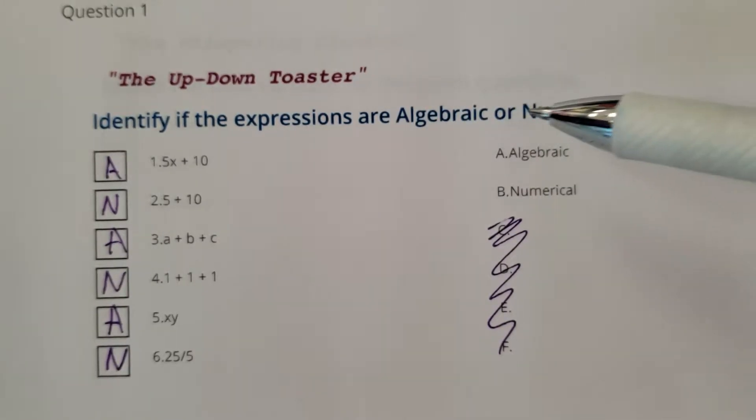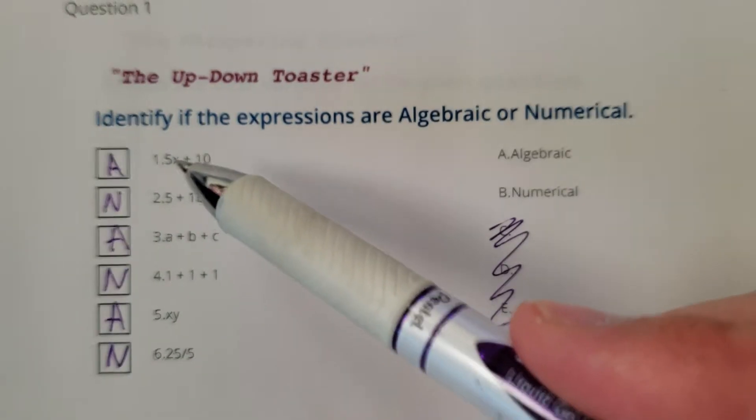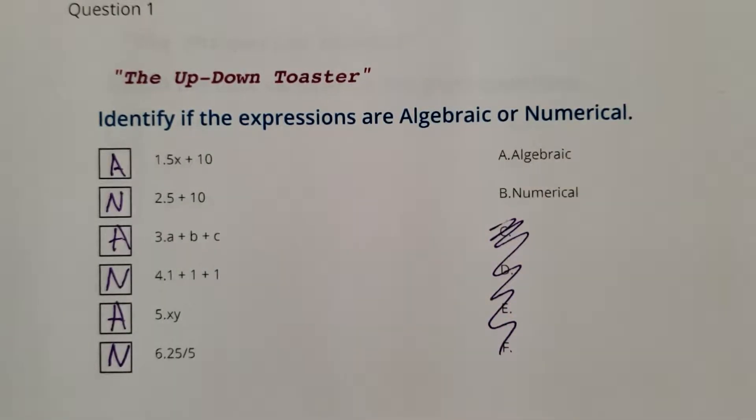Alright, so there you go. That's up-down toaster. Remember, if you're algebraic, you have letters or symbols in there.